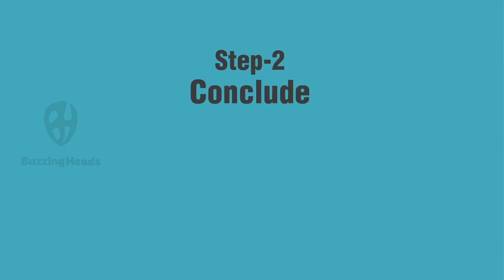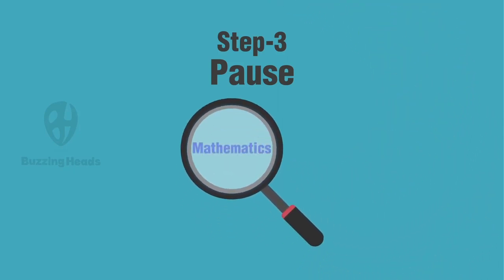Step 2. Conclude. There is no conclusion stated in the argument. All are simple facts. In fact, this is an inference or must be true question in which we have to find the answer choice which will be true based on the statements mentioned. Step 3. Pause. We are supposed to look for answer choices that will mathematically agree with the given statements.